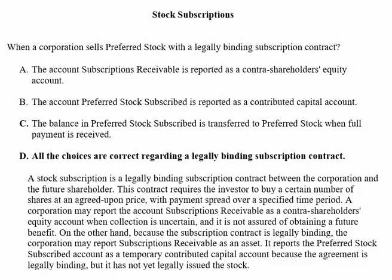A corporation may report the account subscriptions receivable as a contra-shareholder's equity account when collection is uncertain and it is not assured of obtaining a future benefit. On the other hand, because the subscription contract is legally binding, the corporation may report subscriptions receivable as an asset. It reports the preferred stock subscribed account as a temporary contributed capital account because the agreement is legally binding, but it has not yet legally issued the stock.